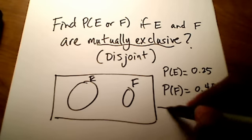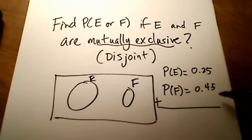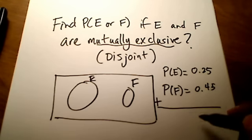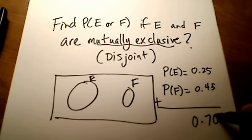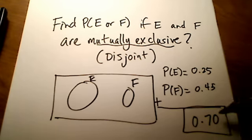Therefore, it's really just the sum of these two probabilities. You can think of it as minus zero for the overlap if you like, but you don't even have to do that. If they are mutually exclusive or disjoint, it's simply 0.25 plus 0.45, giving an answer of 0.7. So if they are mutually exclusive, the correct answer is 0.7.